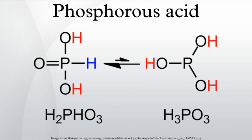When treated with a cold solution of mercuric chloride, a white precipitate of mercurous chloride forms: H3PO3 + 2 HgCl2 + H2O → Hg2Cl2 + H3PO4 + 2 HCl. Mercurous chloride is reduced further by phosphorus acid to mercury on heating or on standing: H3PO3 + Hg2Cl2 + H2O → 2 Hg + H3PO4 + 2 HCl.